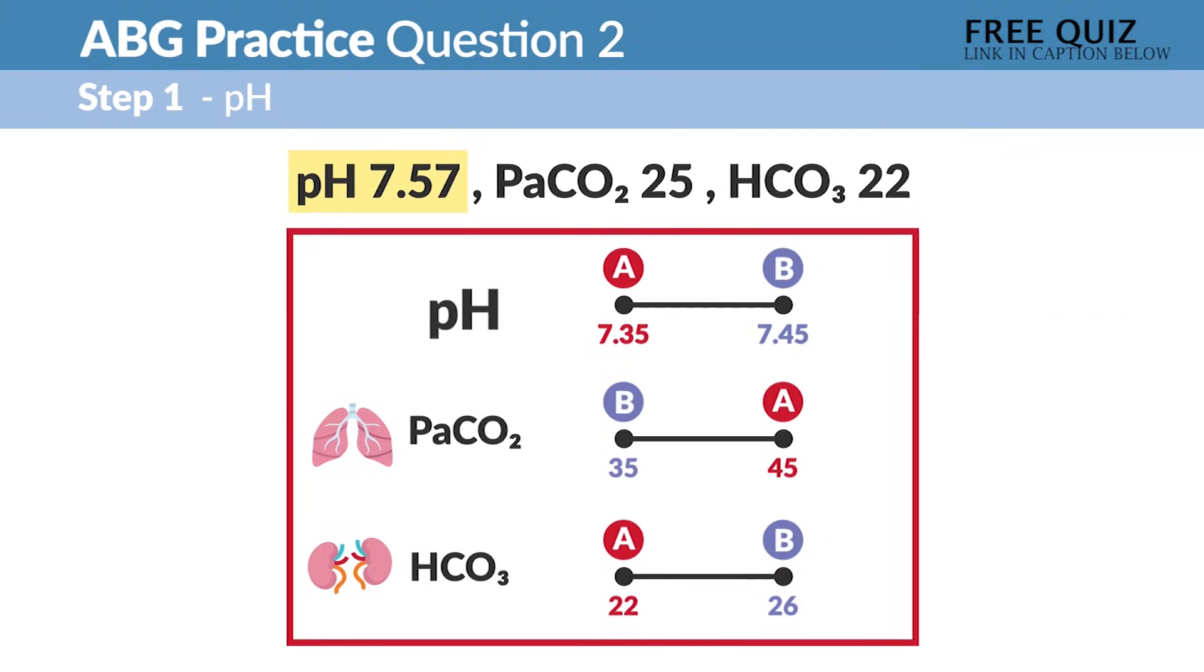So step number one, starting with pH because it's primary. So 7.57, is that acid or is it base? Well, it's way over 7.45, so that little B tells us it's base or an alkalosis.